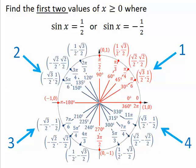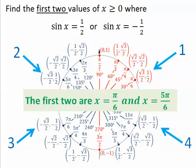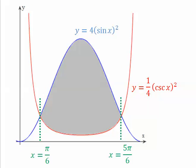So I could just go around this circle around and around and around and get an infinite number of values. And that's only talking about the positive values. So I only want the first two. So the first two are pi over 6 and 5 pi over 6. And so those are my two points of intersection: x equals pi over 6 and x equals 5 pi over 6.